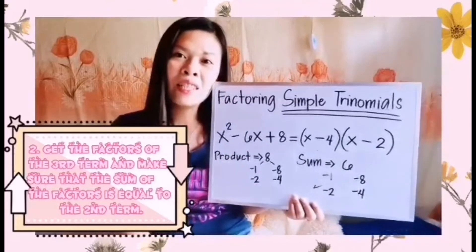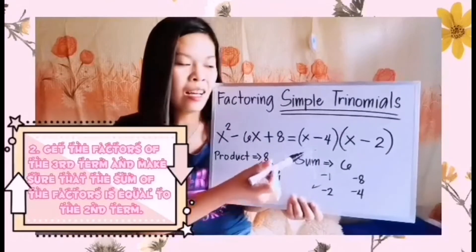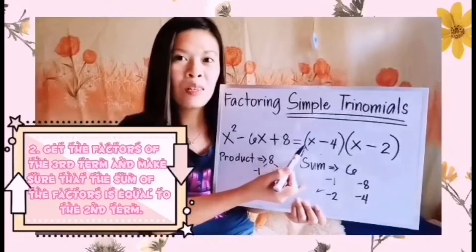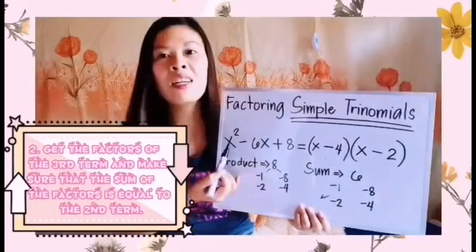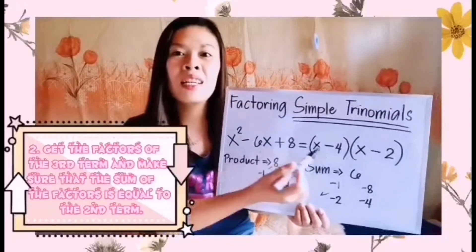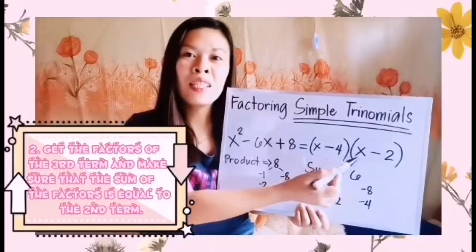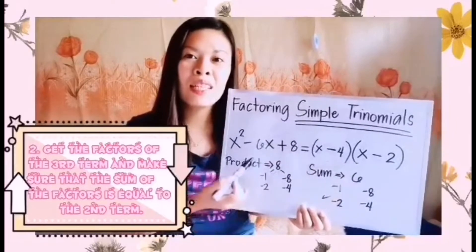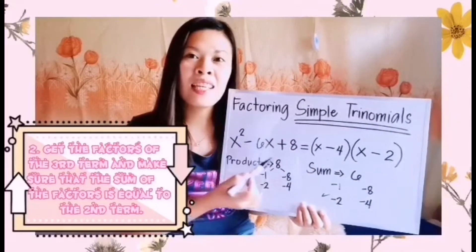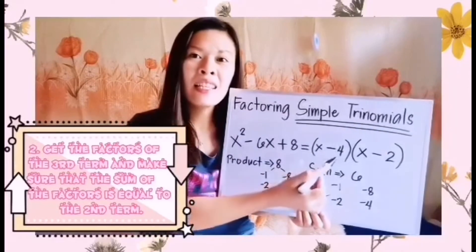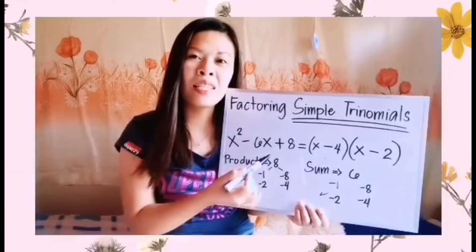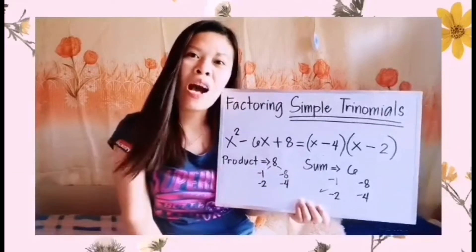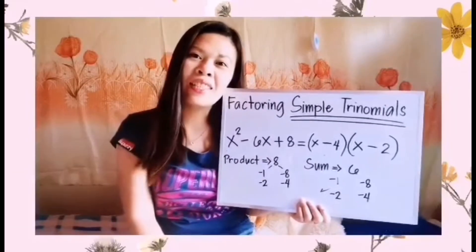To check, let us get the product using special products. x times x gives x squared. Negative 4 plus negative 2 gives negative 6, attached to x. And negative 4 times negative 2 gives positive 8. Therefore, our factors are correct.